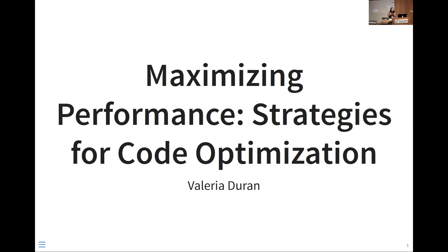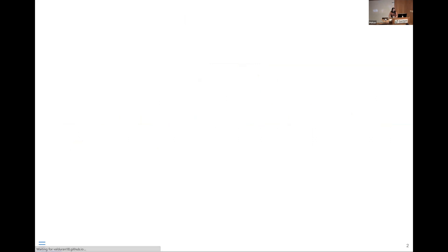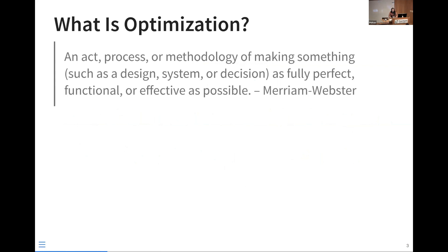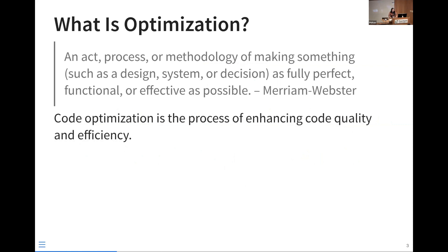These are my own personal experiences and opinions, just FYI. Starting off by defining what optimization is — Merriam-Webster defines optimization as an act, process, or methodology of making something as fully perfect, functional, or effective as possible. When I think about this in terms of code, I think of code optimization as the process of enhancing your code quality and efficiency.